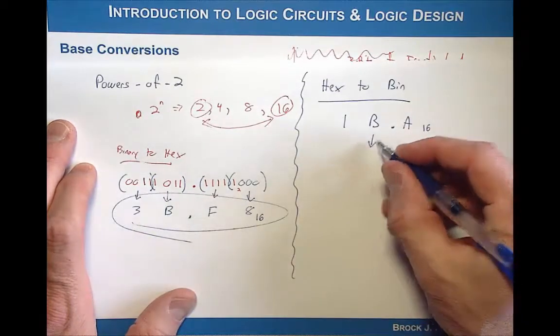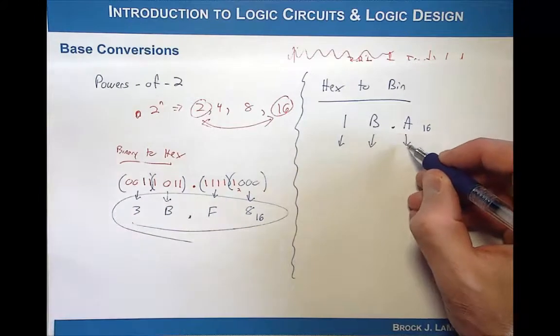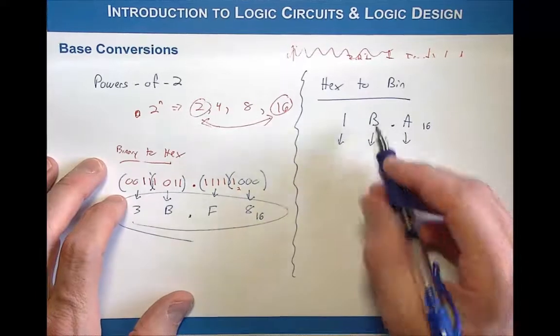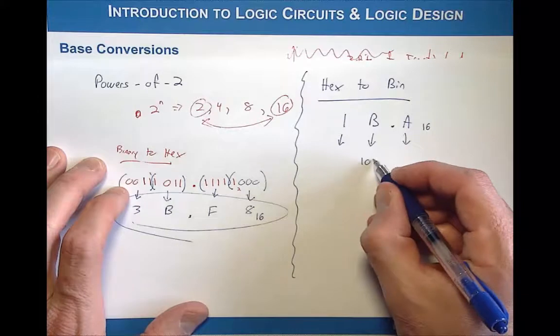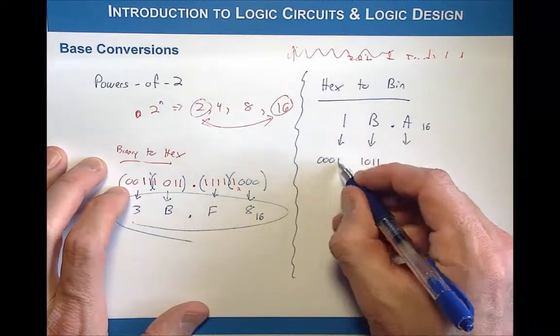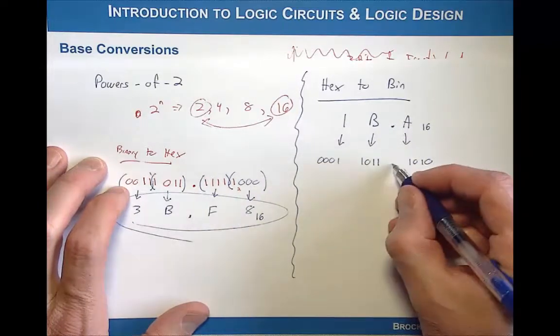All I do is I say B is going to be represented as 4 bits, and 1 is 4 bits, and A is 4 bits. So B, if I go look this up in my table, B is going to be 1011, and then 1 is going to be 0001, and then A is going to be 1010. I bring the decimal point down.